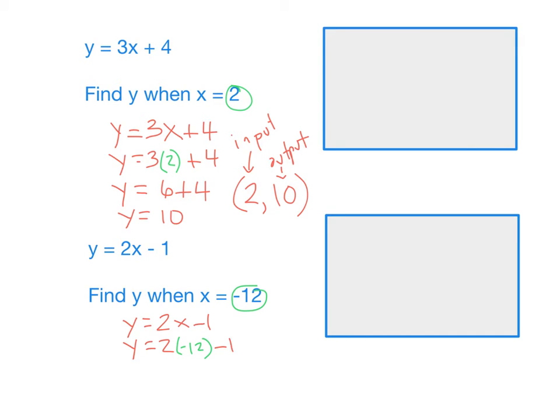And again, order of operations, we're going to multiply and get negative 24 minus 1. So, y equals negative 25. So, our input-output situation here, our input was negative 12, and the output was negative 25.